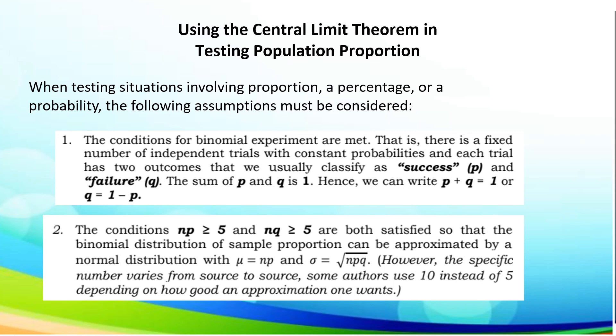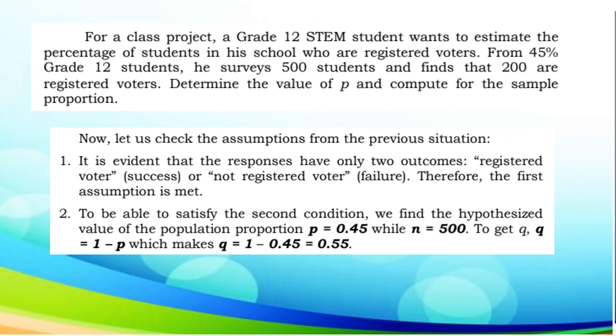Let us apply this in a given statement. For a class project, a grade 12 student wants to estimate the percentage of students in his school who are registered voters. From 45% grade 12 students, he surveys 500 students and finds that 200 are registered voters. Determine the value of p and compute for the sample proportion. That was the given example a while ago. Now let us check the assumption from the previous situation. It is evident that the responses have only two outcomes: registered voters and not registered voters. Therefore, the first assumption is met.